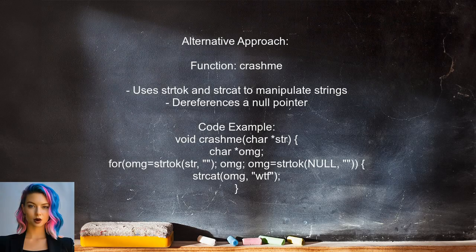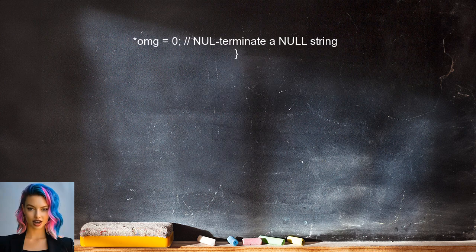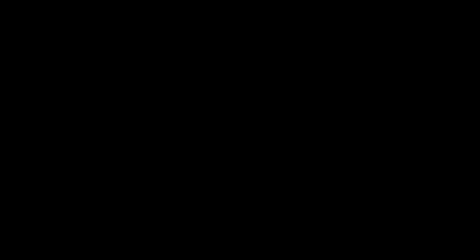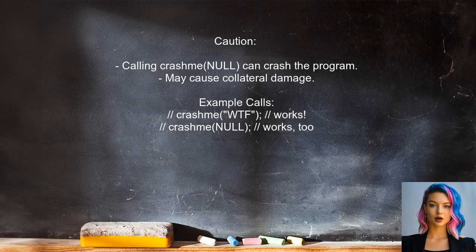Another alternative involves a function called CrashMe, which uses string manipulation to intentionally cause a crash. It attempts to concatenate a string to a null pointer, which can lead to undefined behavior and potentially crash the program. Calling CrashMe with a null pointer or an empty string can also lead to a crash, but this method might cause collateral damage, so it should be used carefully.